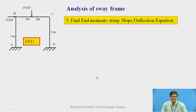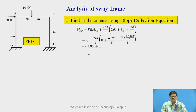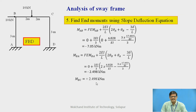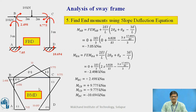Then we find the end moments using the stiffness slope deflection equation. Substituting all the values — FEM_AB = 0, length of AB = 3 m, θA = 0, θB is known — with clockwise rotations and moments taken as positive and anticlockwise as negative, we get MAB = −7.05 and MBA = −2.498. MBC is equal and opposite to MBA. The remaining moments are determined similarly using the slope deflection equation. The free body diagram is drawn with respect to the moments — positive moments shown clockwise, otherwise anticlockwise — and finally the bending moment diagram is drawn by superimposition.